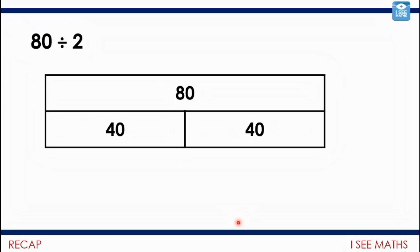Let's get back to division. When we first started looking at division, we called the video 'memory lane' because we were looking back on previous strategies you've learned. Today we're looking back at that video — this is memory lane of memory lane. We said if you were doing 80 divided by 2, you're unlikely to be thinking 'how many 2s in 80' but thinking 'I'm going to split 80 into 2 equal parts.' The answer of course being 40.